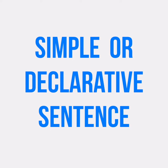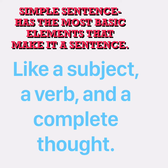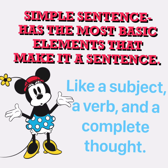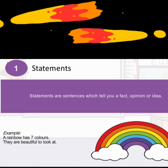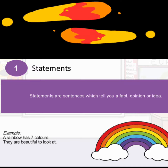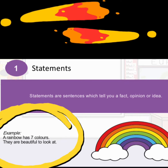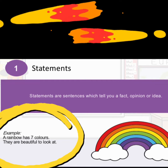A simple or declarative sentence has the most basic elements that make it a sentence: a subject, a verb, and a completed thought. Simple sentences are also called statements. These are sentences which tell you a fact, opinion, or idea. For example: 'A rainbow has seven colors. They are beautiful to look at.'